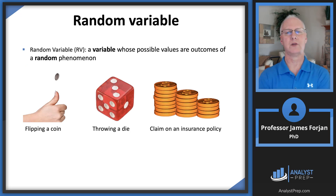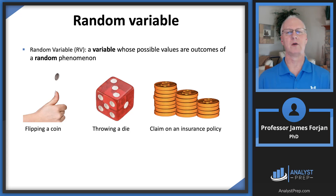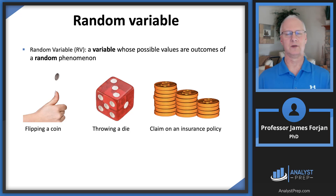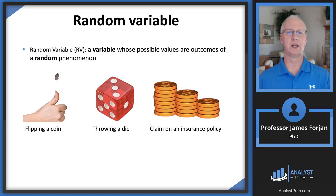Let's get to the basic definition. What is a random variable? A variable whose possible values are outcomes of a random phenomenon. The classic examples: you flip a coin — it could be heads or tails. There are only two choices, so there's a 50% chance, but it's random over time, meaning you can't predict whether the next flip is going to be heads or tails.